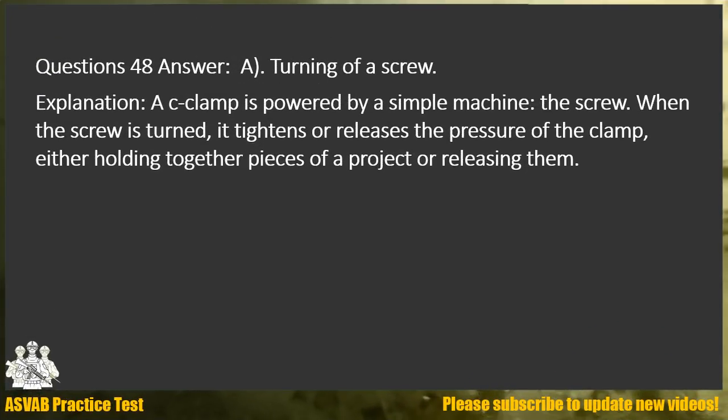Question 48. Answer A. Turning of a screw. Explanation: A C-clamp is powered by a simple machine — the screw. When the screw is turned, it tightens or releases the pressure of the clamp, either holding together pieces of a project or releasing them.